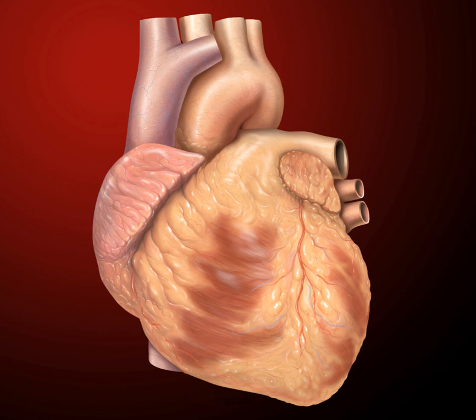Because the heart is between the lungs, the left lung is smaller than the right lung and has a cardiac notch in its border to accommodate the heart. The heart is cone-shaped, with its base positioned upwards and tapering down to the apex. An adult heart has a mass of 250 to 350 grams.